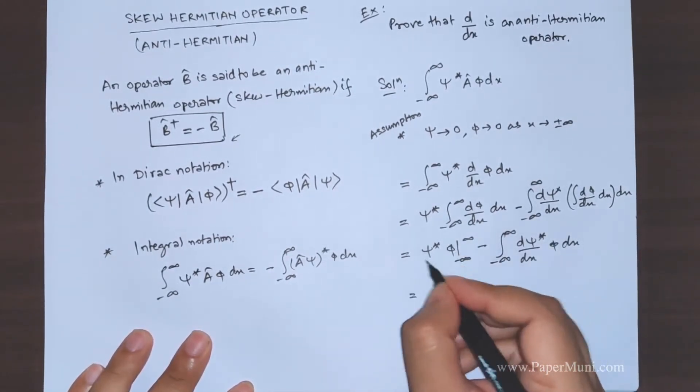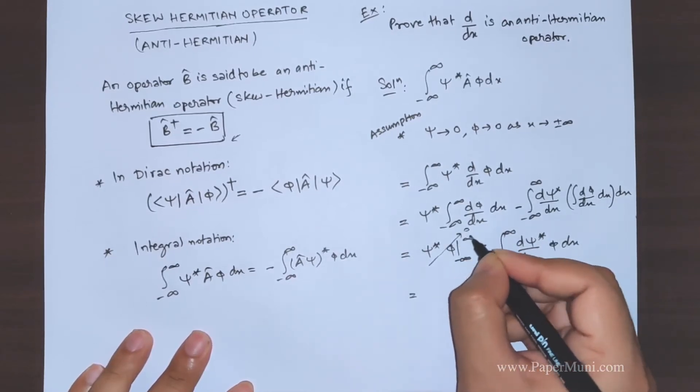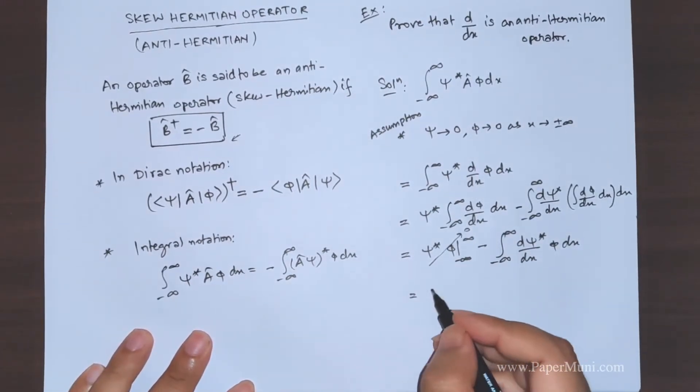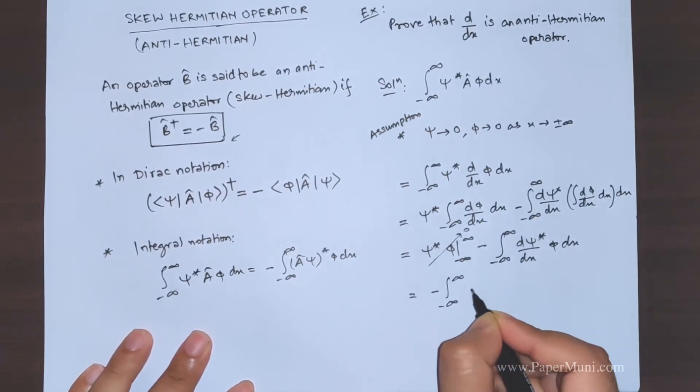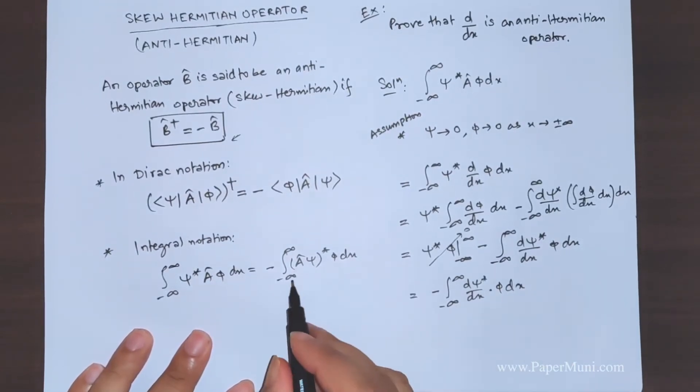So this term becomes zero because we have assumed that phi and psi are accepted bound state wave function and at the upper limit and lower limit both become zero. So this term becomes zero. So what we are left with is d psi star dx phi dx. So this matches with this format, the right hand side.